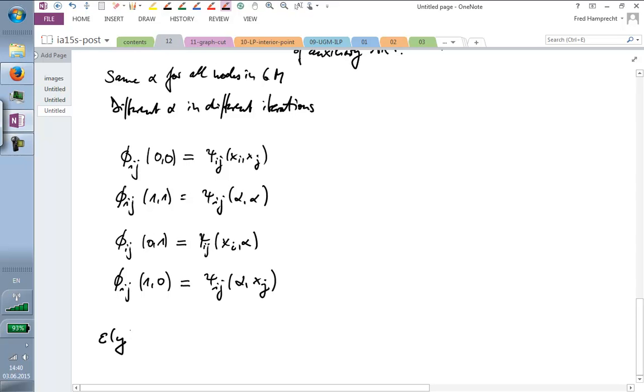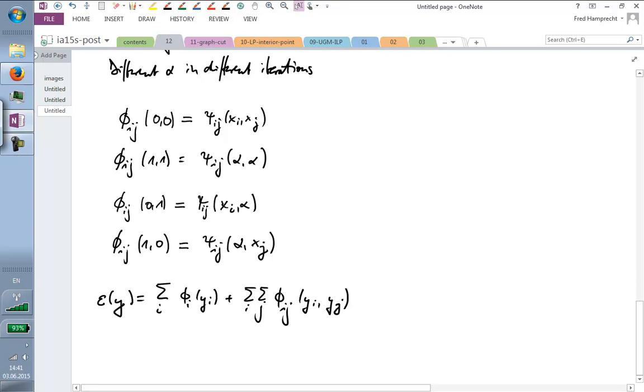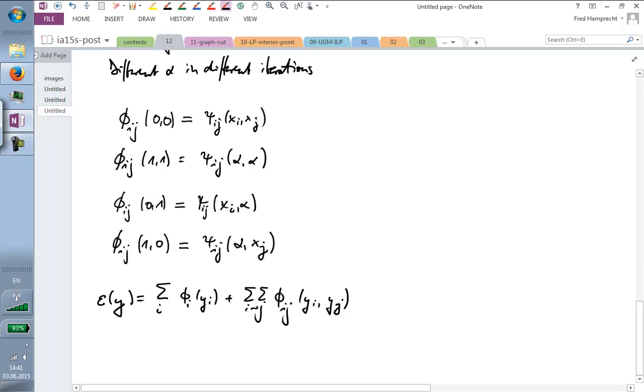Okay. So, those were the unaries. And now I need to define also new pairwise potentials. So, the contribution to the energy function that I get by keeping both pixels or keeping both labels is just this. Do you have another question or comment? Okay. If we change both labels to alpha, then this incurs a cost of psi ij alpha alpha. If I let i have its old label, excuse me. Then here I get psi ij of xi and alpha. And if I let the other one switch to alpha and keep the original label in the second node, good. Then I pay psi ij of alpha and xj.